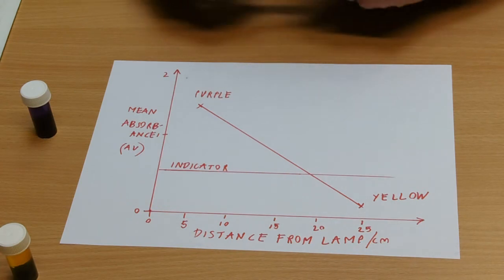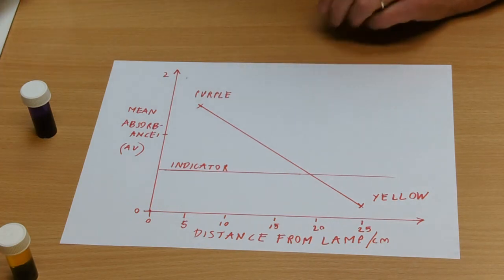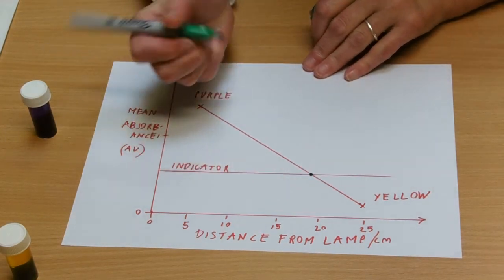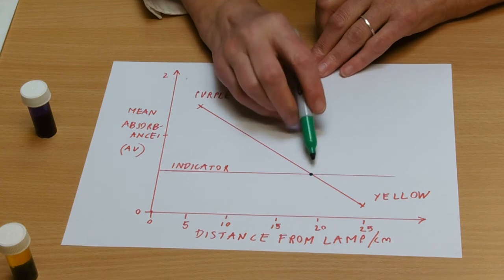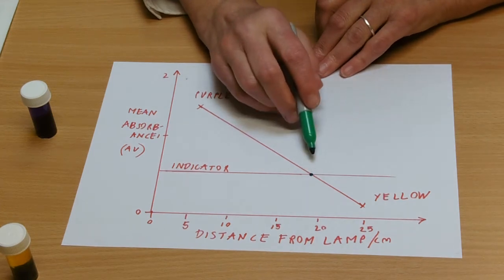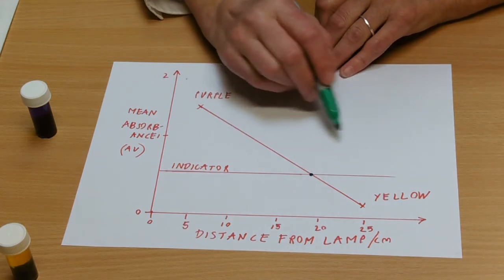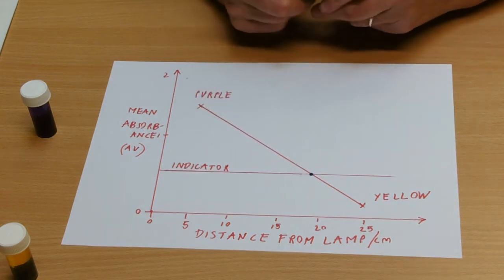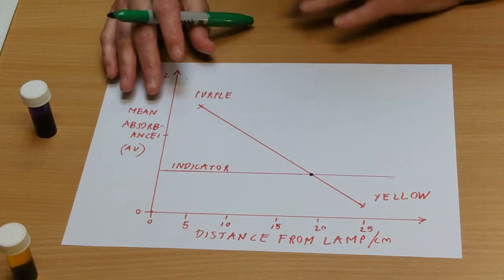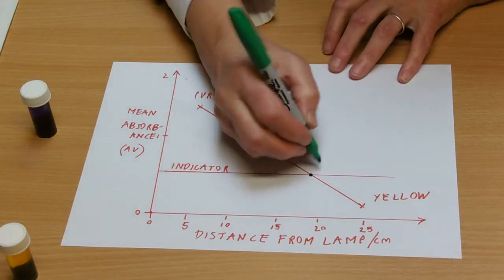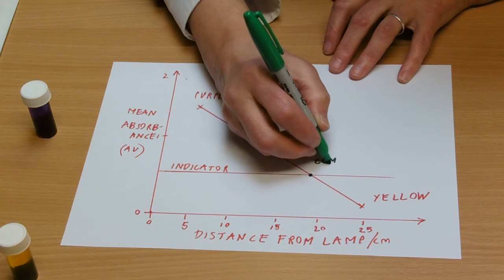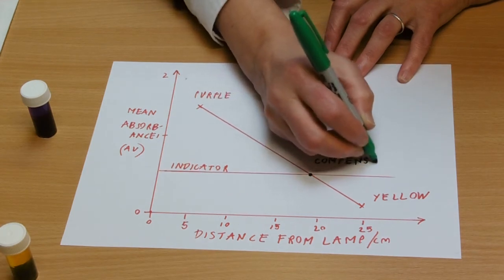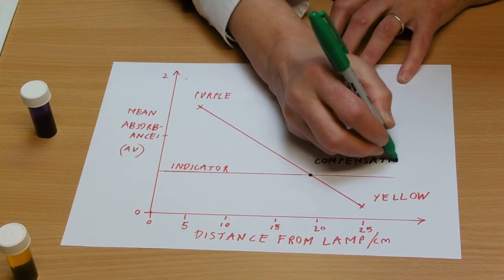And so where those two lines cross is where there is no change in the indicator. And you need to think, well, why is there no change in the indicator there? Well, respiration and photosynthesis are respectively producing and using as much carbon dioxide. So we call this point, and I think that the instructions tell you to work out where this is. We call this the compensation point, and it's just where the two processes are equal.